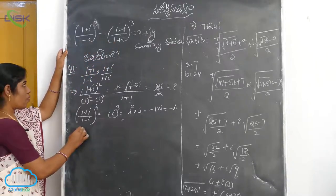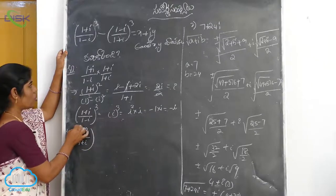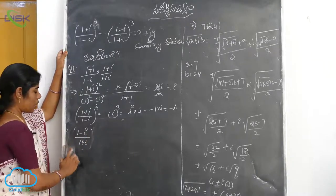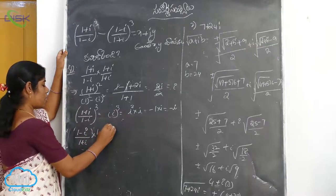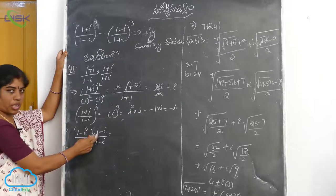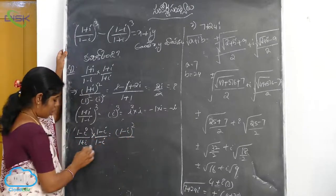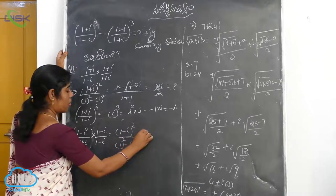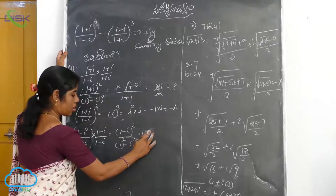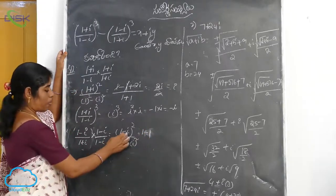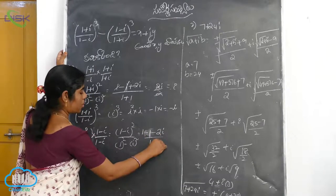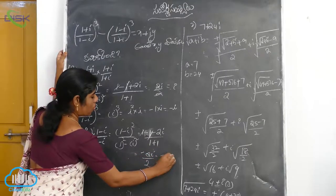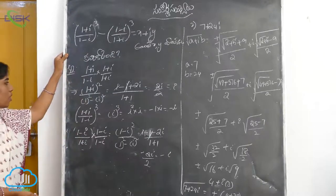Now for (1-i)/(1+i) whole cube. We simplify (1-i)/(1+i) by multiplying by (1-i)/(1-i). Using a²-b² formula in the denominator and (a-b)² in the numerator. The numerator gives (1-i)² = 1 - 2i + i² = -2i, and denominator = 2. So (1-i)/(1+i) = -i, and the cube equals minus i cubed, which equals minus(-i) = minus i.